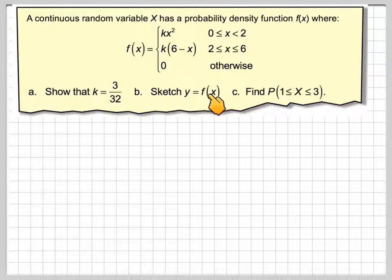It says show that the value of k is 3/32, sketch y equals f(x), and find the probability that x is between 1 and 3. Now for a continuous random variable it doesn't matter if it's actually equal to or not equal to, it's still the same thing because the function is continuous.